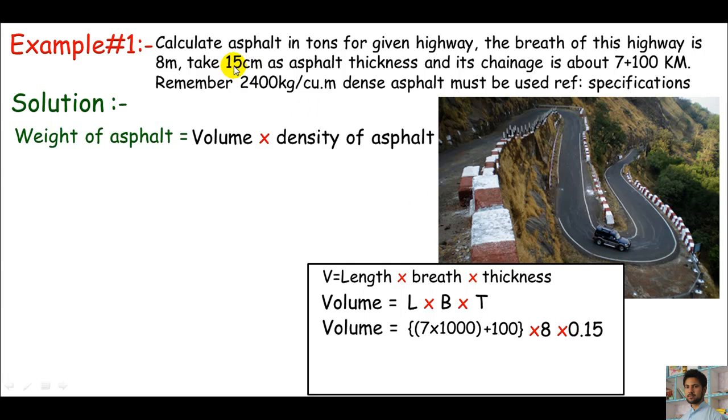Plug and chug. When you calculate, 7 times 1000 gives you 7000 plus 100, which means 7100 meters. This is the length of this highway in hilly area. Times breadth which is 8, times 0.15 which is thickness. You get 8520 cubic meters. Yes, this is the volume.